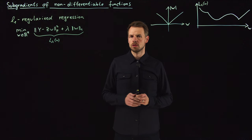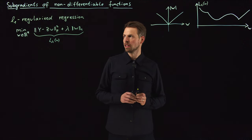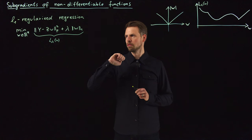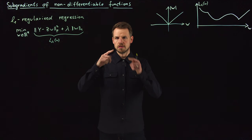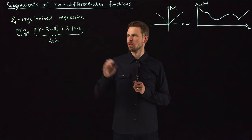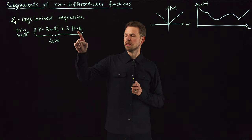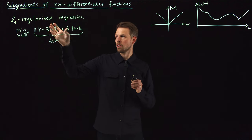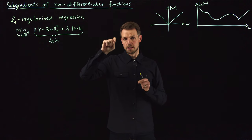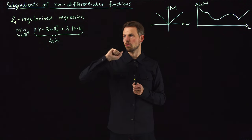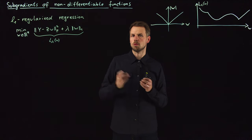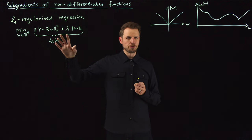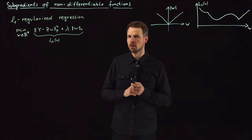Hello everyone and welcome back to the next video in our section on model selection. We have until now seen how the one norm induces sparsity, because we get these peaky level sets, and we saw that in many cases the smallest one norm point — or the trade-off between a loss minimization and the one norm — lies at the peak of such a level set, meaning that at least one weight is zero. This is why the one norm induces sparsity and why we use it in training as a regularization term.